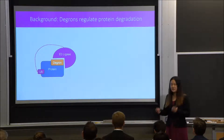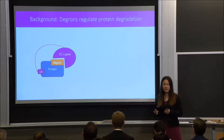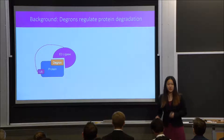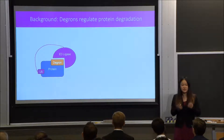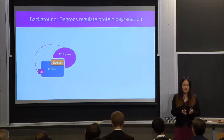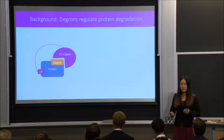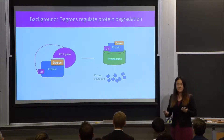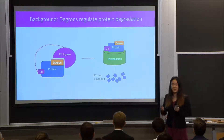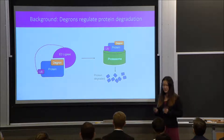In a way, protein degradation can be thought of as a domino chain reaction, where one inciting incident leads to the result of another event, which causes another event, ultimately resulting in the destruction of a protein. In this case, the inciting incident is the recognition of a degron.